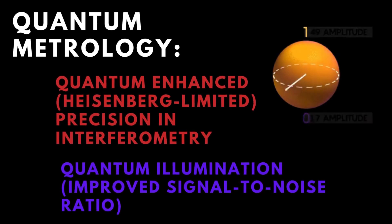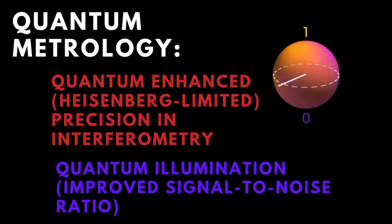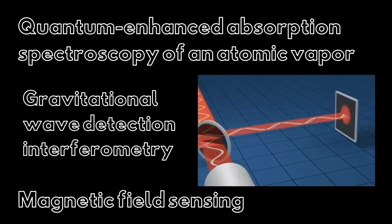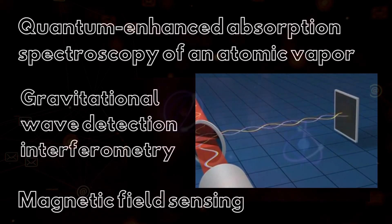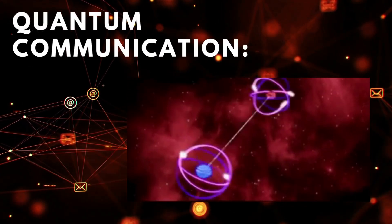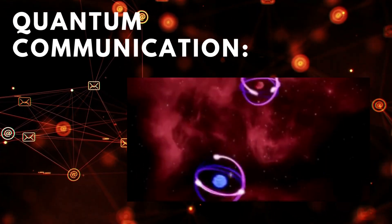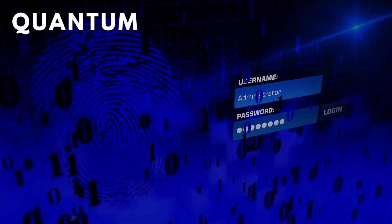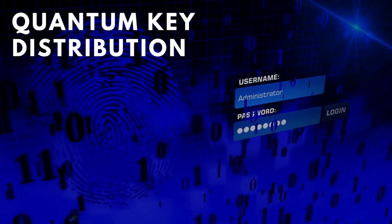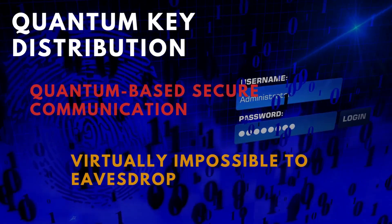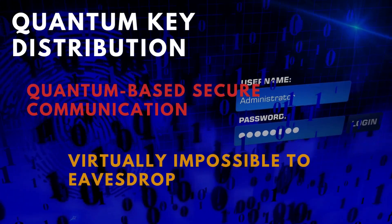This technology has many applications including precision spectroscopy, gravitational wave detection, and magnetic field sensing. Finally, in quantum communication, photonic qubits can be used for secure transmission of quantum information over long distances. Quantum key distribution enables secure communication that is immune to eavesdropping, making it ideal for fields such as finance, military, and healthcare.